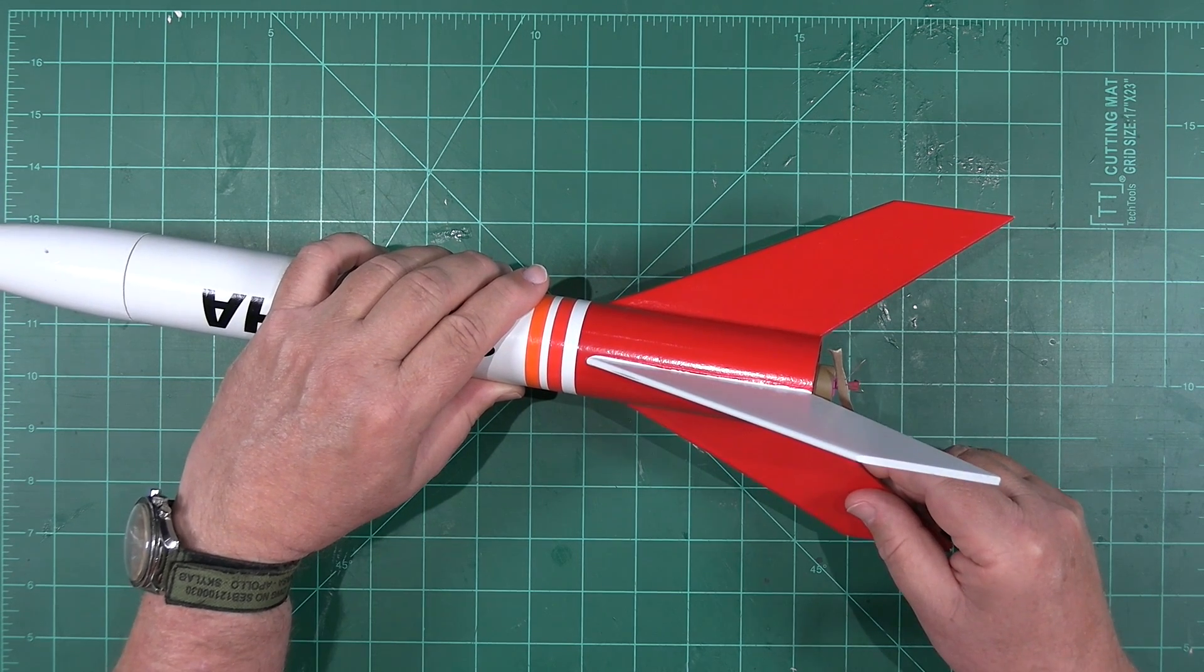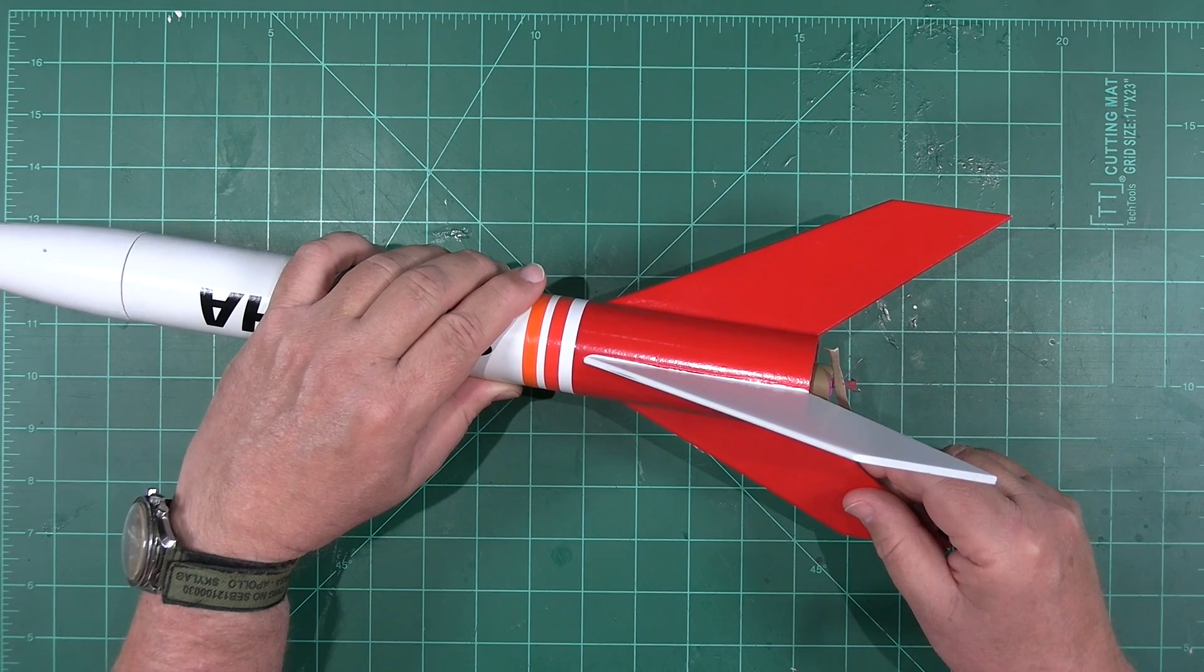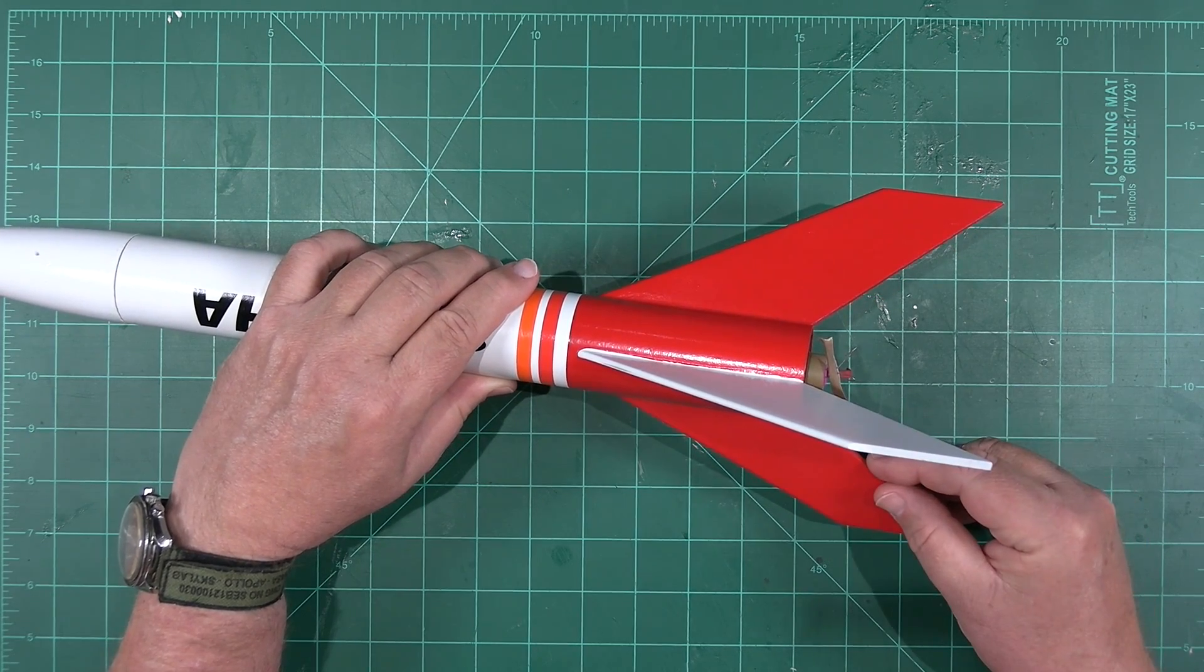Finally, we'll raise the rocket up off of the blast deflector. A simple clothespin is great for this.